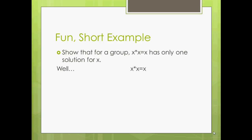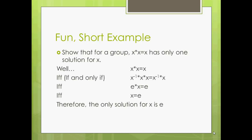We start out with x★x = x. Now, we know it's a group, so we know each element has an inverse. We multiply the inverse on the left side of each side of the equation. x⁻¹★x — what is that? It's just e, our identity. So we end up with e★x = e. Well, e★x is just x — it's like 1 times x, that's just x. So we've shown that if x★x = x, then x is the identity. It can't be anything else. There's only one solution: x must be e.